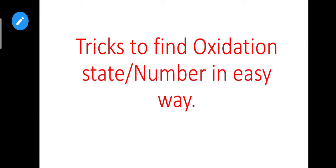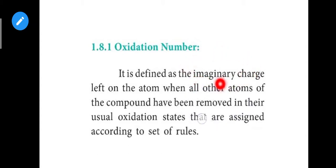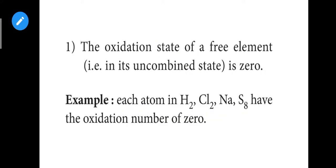In this video we will see the oxidation state and how it is defined. The oxidation state is defined as the imaginary charge — so values like plus 2, plus 3, minus 1, minus 2. It is an imaginary charge on a particular element in an atom, and that is the oxidation number.